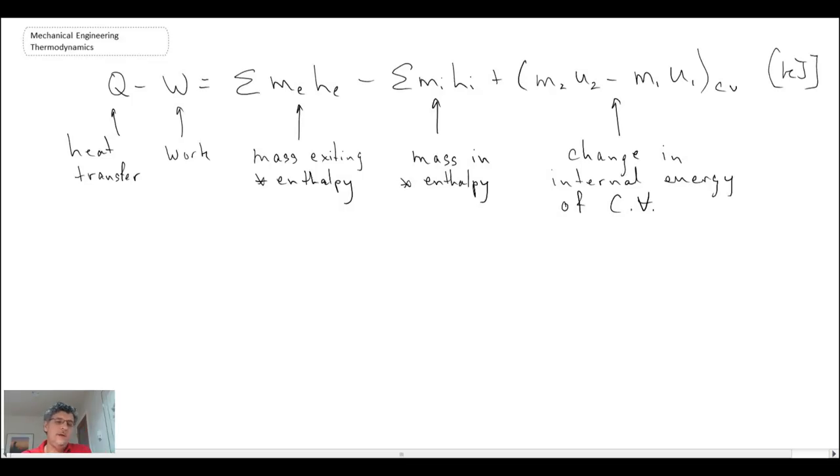So that's a form of the first law that we can use for cases where we have unsteady flow under the uniform flow approximation or assuming it to be a uniform flow process.